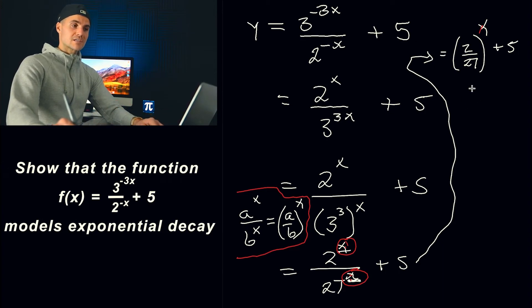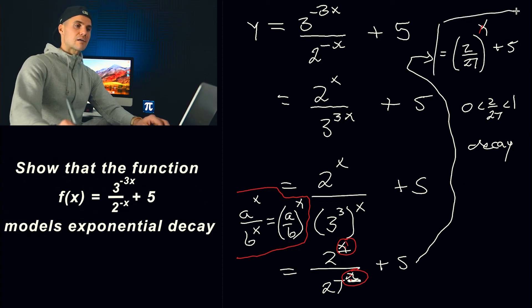and which of the cases is it well 2 over 27 that is between 0 and 1 and so because the base is between 0 and 1 we have a positive exponent x right the 5 doesn't matter as we mentioned we know that this models exponential decay like that you gotta take this rewrite it in this kind of format so you could show that we got a base between 0 and 1 we got a positive exponent x there and therefore we know it's going to be exponential decay and that's a wrap for the video